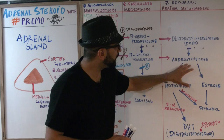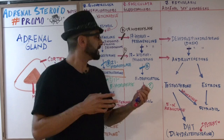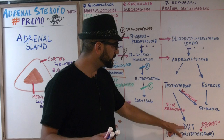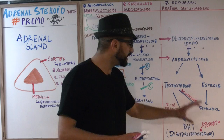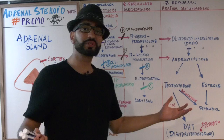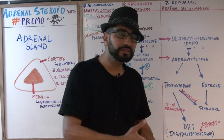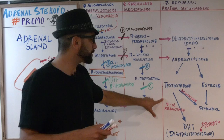Once we have androstenedione, it gets broken down into both testosterone and estrone. Testosterone and estrone are then converted into estradiol — testosterone via the enzyme aromatase. Testosterone also gets converted into DHT, dihydrotestosterone, which is a more potent form of testosterone that gives males their secondary sexual characteristics. We'll see what happens based on enzyme blocks — whether we have too much or too little DHT and the effect on males and females. Testosterone is converted into DHT by 5-alpha reductase.